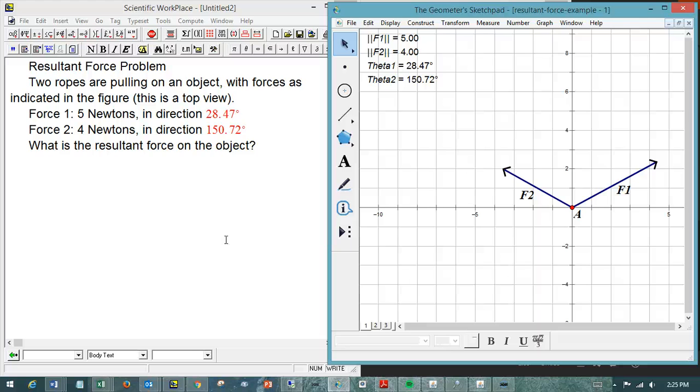Let's look at a resultant force problem with vectors. Here's how I've got a diagram. This is a top view of a situation. I've got an object A, I think of it as a person maybe, being tugged in two different directions. So maybe by ropes. There's two ropes pulling on the same object, and the forces are as indicated.